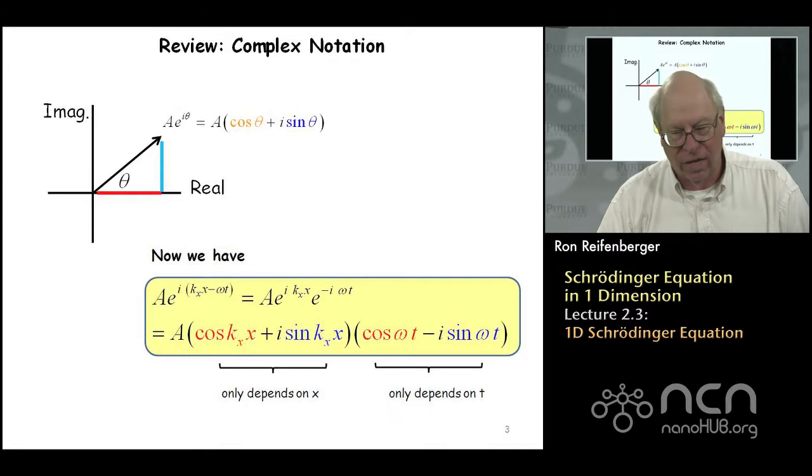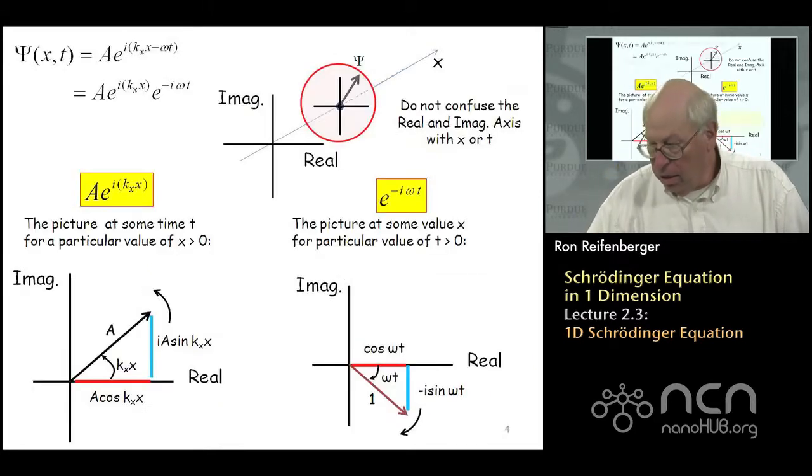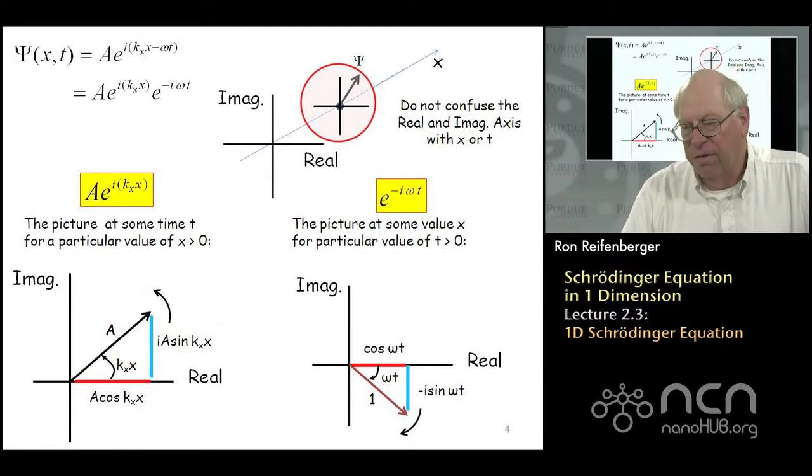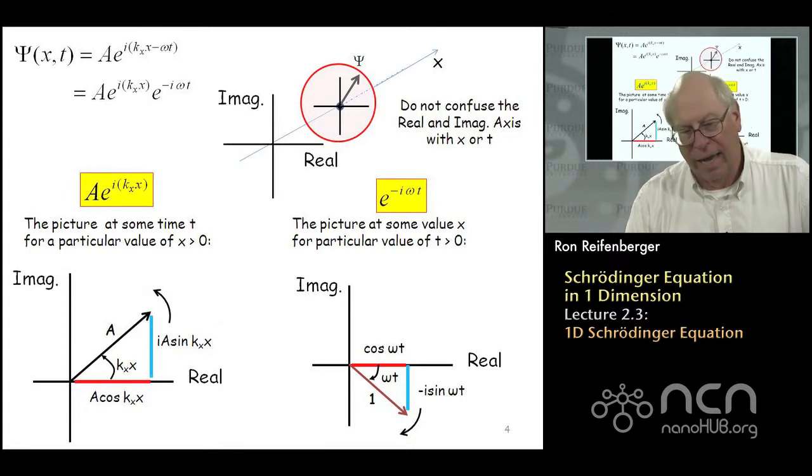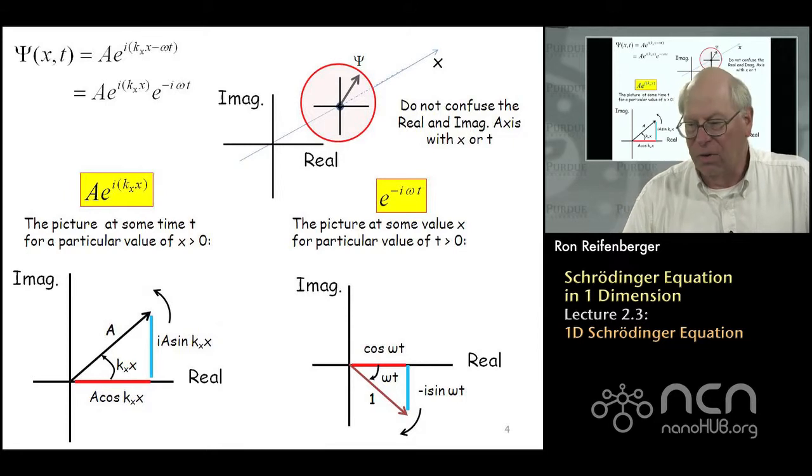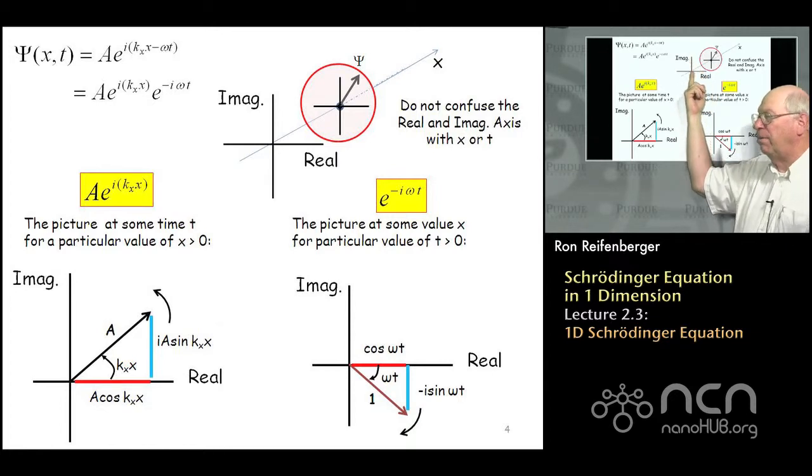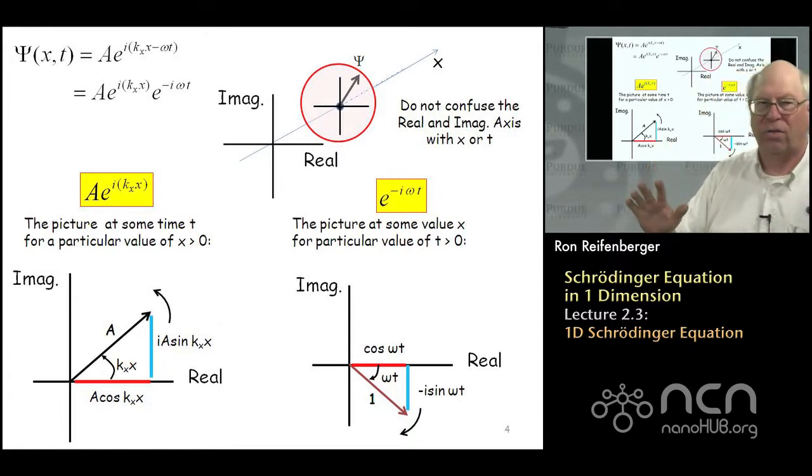So one thing I've learned is that students tend to confuse this real and imaginary axis with either the x-axis or the time axis. And that absolutely can't happen, and I try to make the case here. When you write this function in terms of a real and imaginary component, the axes that you use to plot the real and imaginary component have absolutely nothing to do with x or t.